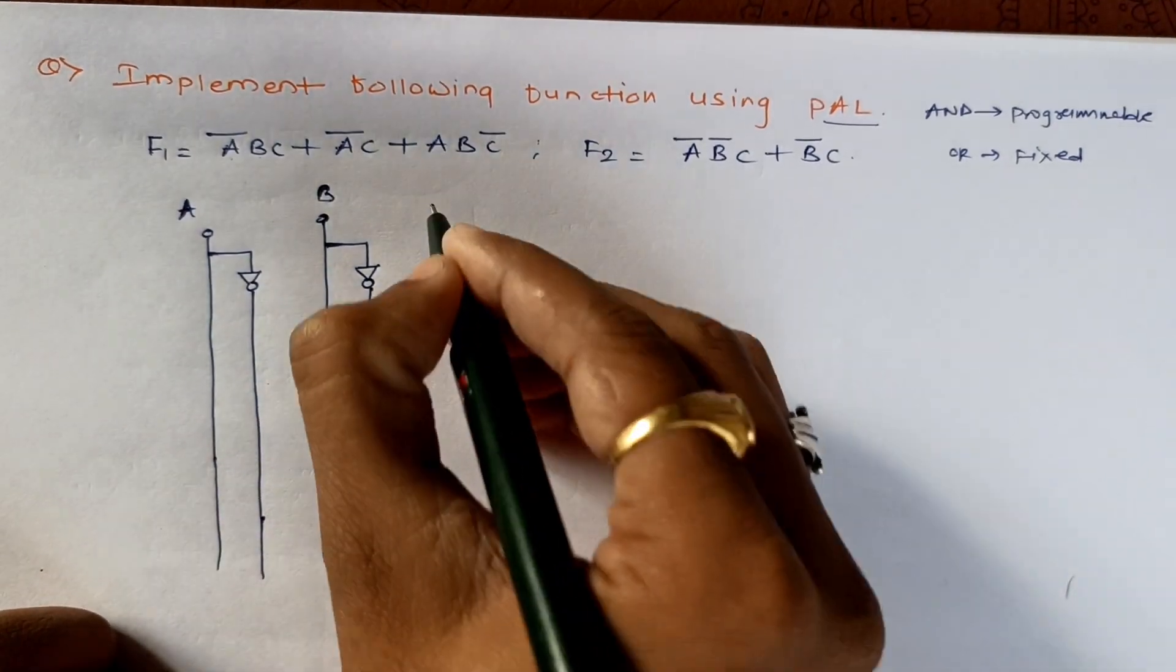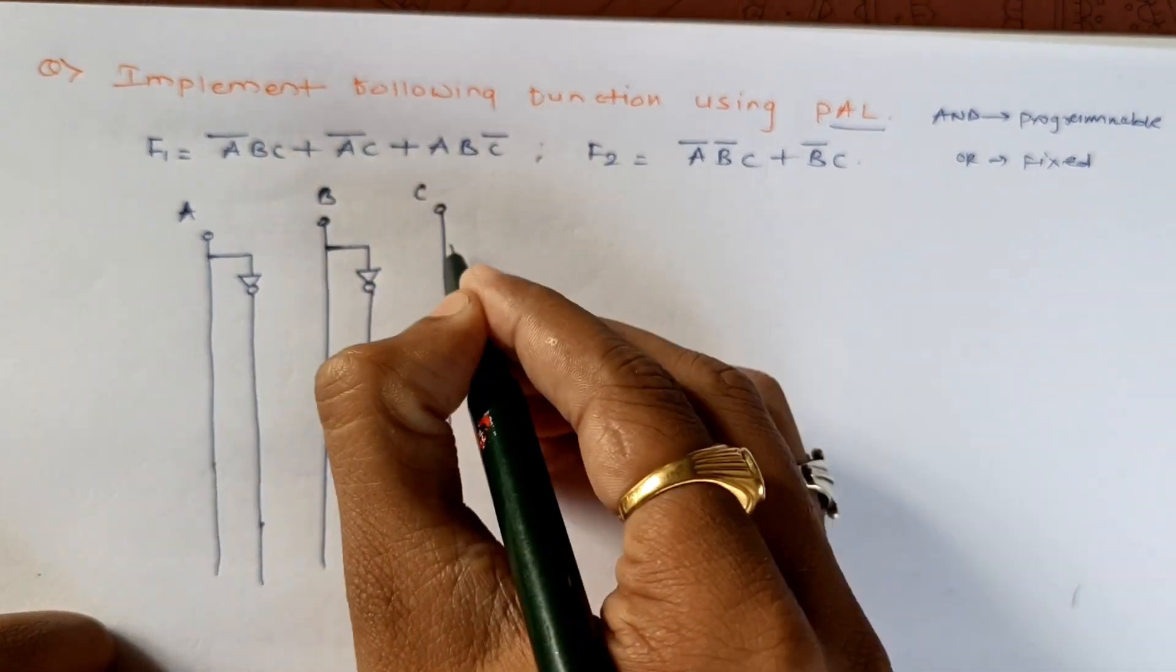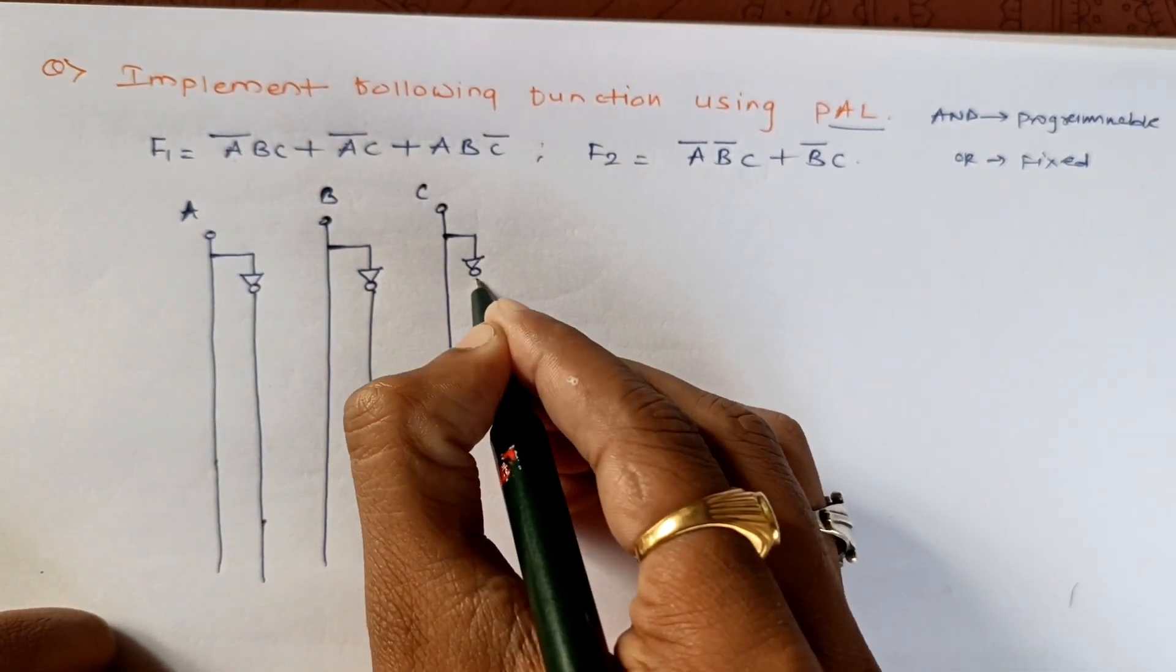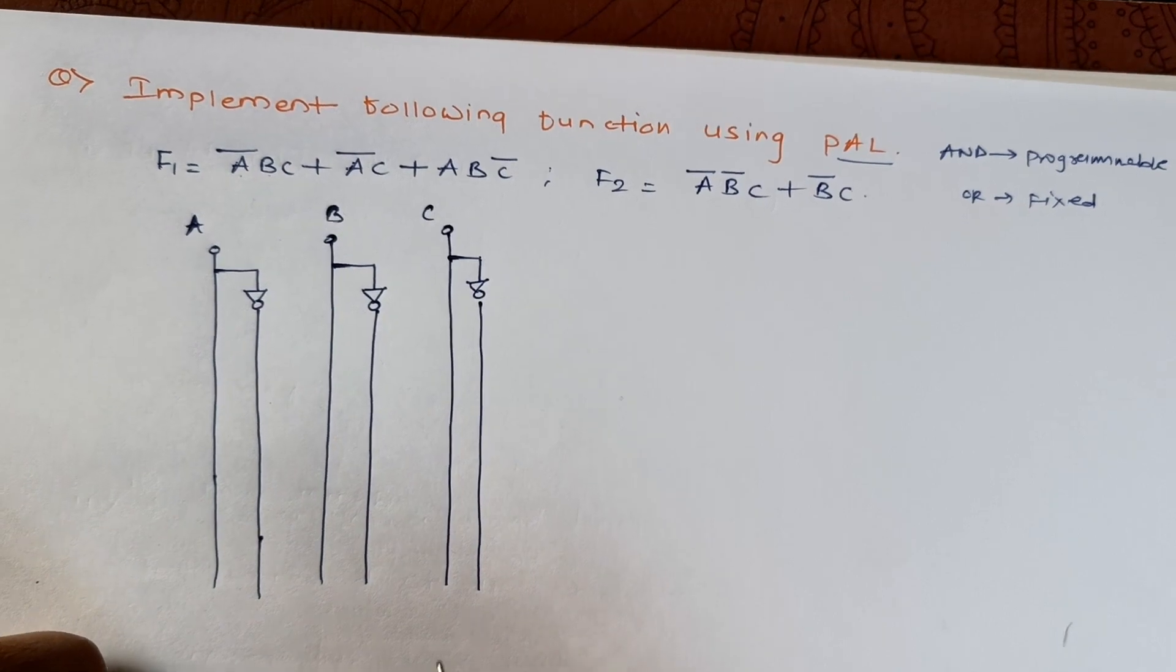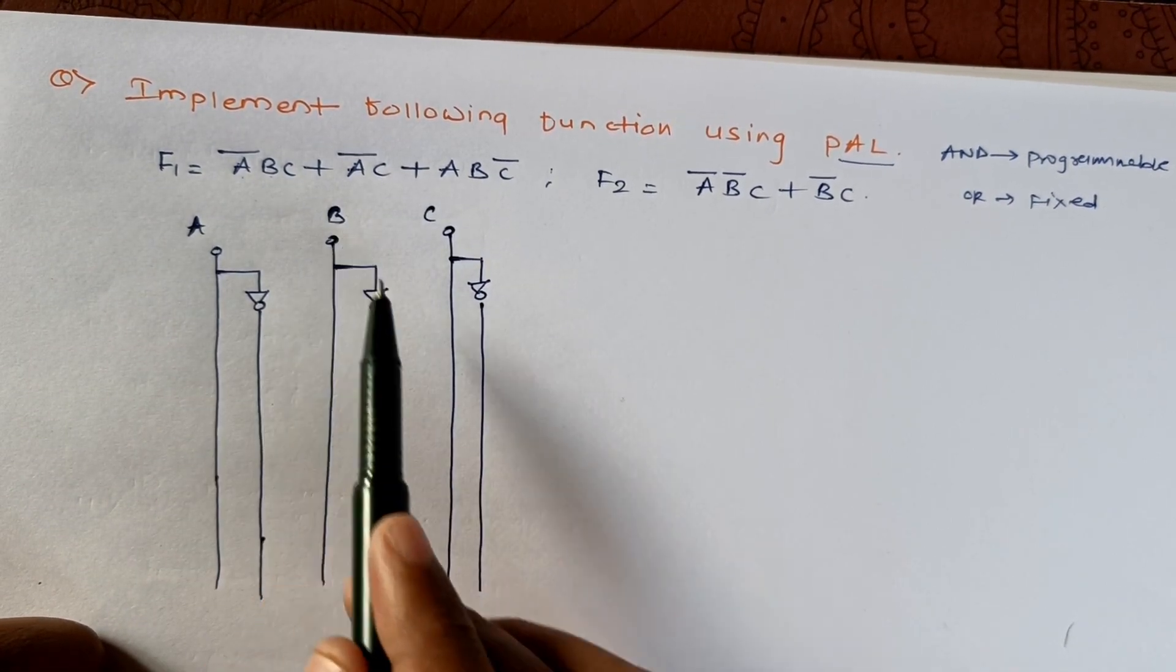And for C and this will be C bar. Okay, so I made a provision for A, A bar, B, B bar, C, and C bar.